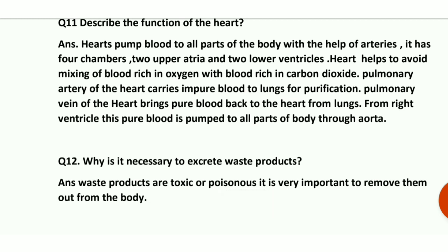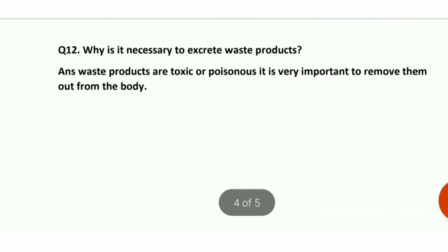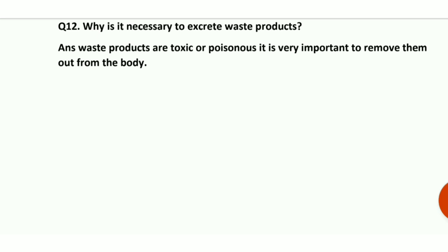Question number 11: describe the function of the heart. Our heart is a pumping organ — it pumps blood to the whole body through arteries. It has four chambers: the upper two are called right and left atria, and the lower two are right and left ventricles. This chamber structure prevents mixing of pure and impure blood. Impure blood from the body arrives at the right side via veins, goes to the lungs via pulmonary artery to be purified, then the pulmonary vein returns it to the left atrium, and the left ventricle pumps pure blood throughout the body.